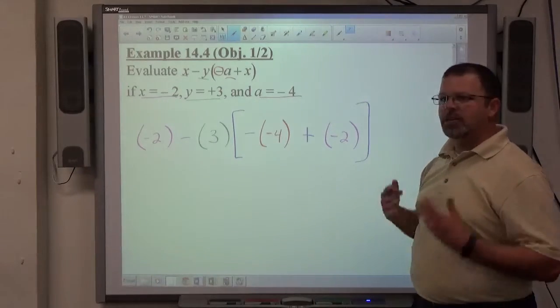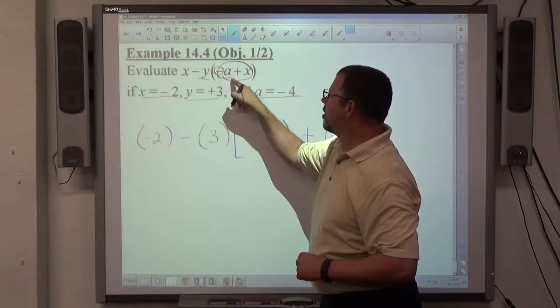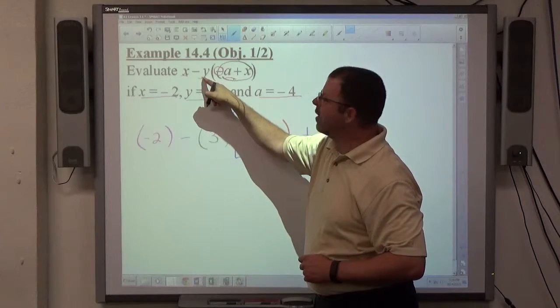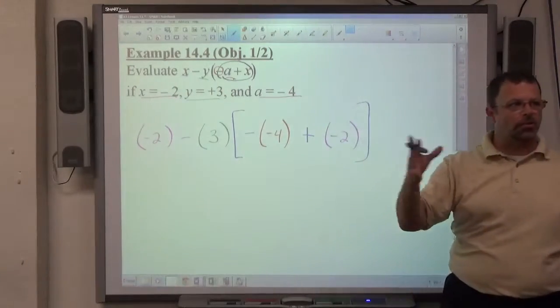I start simplifying as much as I possibly can. The original structure, this has to be evaluated first. That sum or difference has to be multiplied by whatever y is. And that product has to be subtracted from x, right? That's the original structure. I want to keep that structure the same.